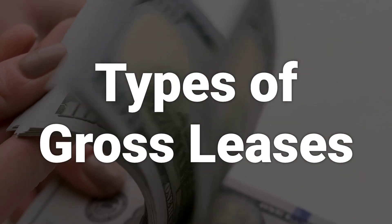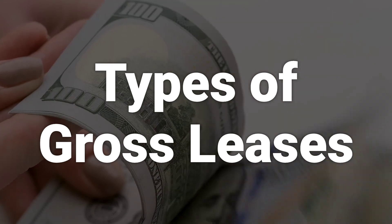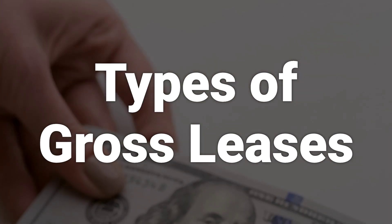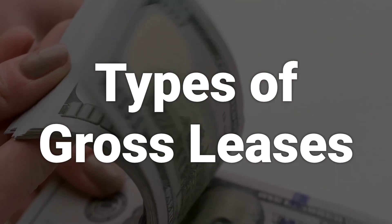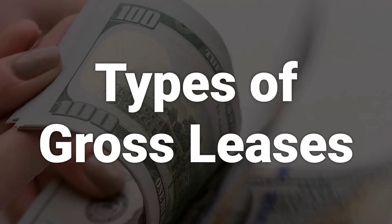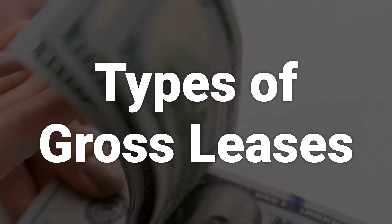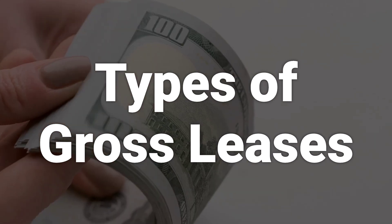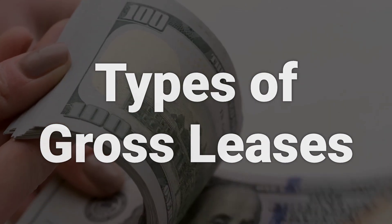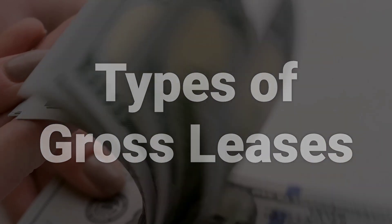Gross leases fall into two categories: modified gross leases and fully service leases. A modified gross lease is a combination of a gross lease and a net lease, allowing for adjustments to suit the needs of both the property owner and tenant. A fully service lease requires the tenant to cover only the rent, while the landlord assumes responsibility for all other costs.